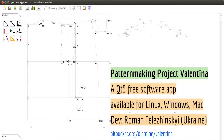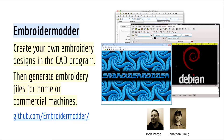Because of this work, we were also contacted by others, including the developer of Project Valentina — a software built on Qt5 by a developer from Ukraine — which is another open source tool for creating sewing patterns.